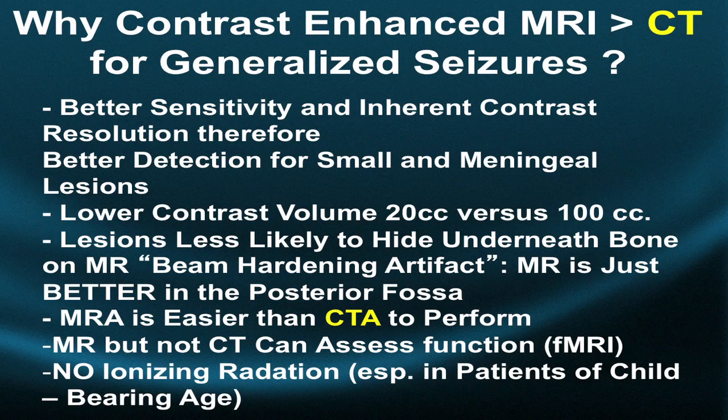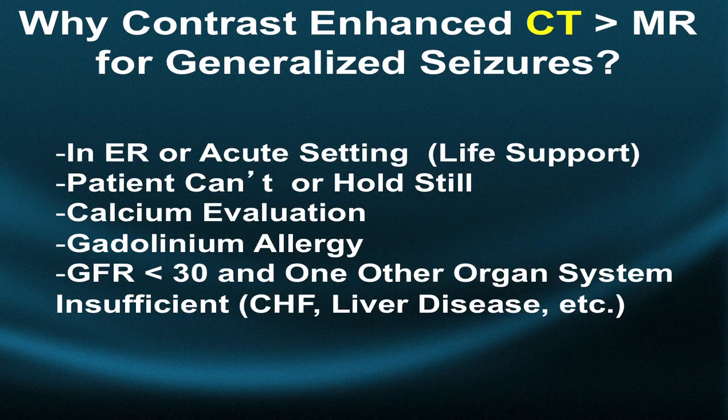MRI, but not CT, can assess brain function — it can assess the utilization of oxygen and blood flow to the brain when you perform a certain function like wiggling your pinky, speaking, or counting, which is frankly amazing. Finally, MRI delivers no ionizing radiation, which is especially important in children or patients of childbearing age.